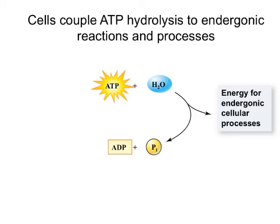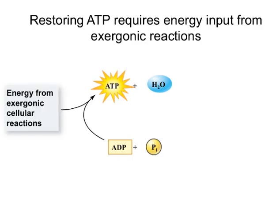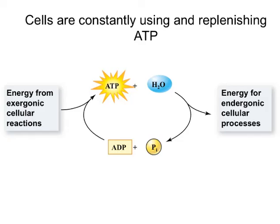The energy released by ATP hydrolysis can be used to power endergonic cellular processes. We hydrolyze ATP to form ADP and inorganic phosphate, but then cells need to restore ADP back to ATP, which requires the input of energy. That energy is supplied by other exergonic reactions. Cells are constantly cycling between ATP and ADP — using ATP for regular activities and harvesting energy from other molecules to restore the ATP that was used.